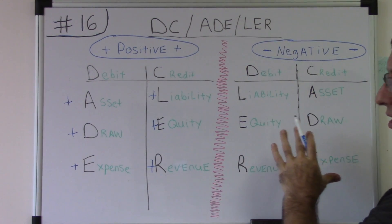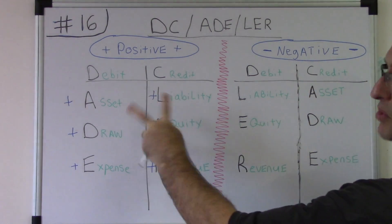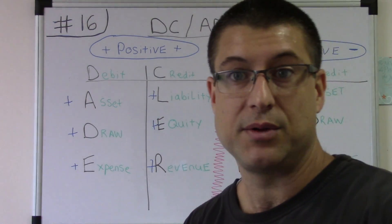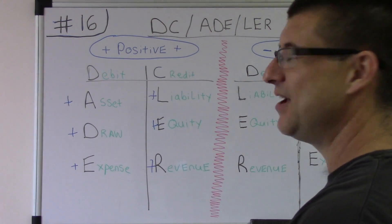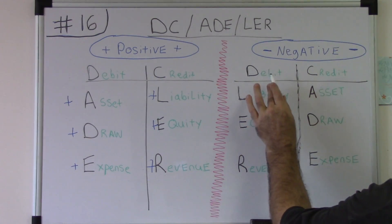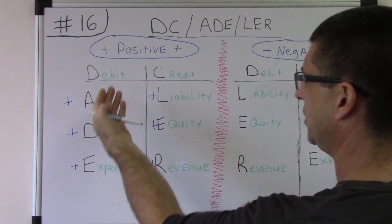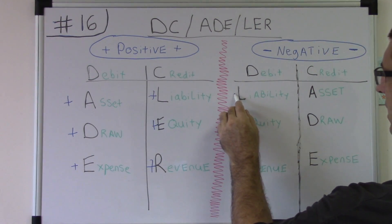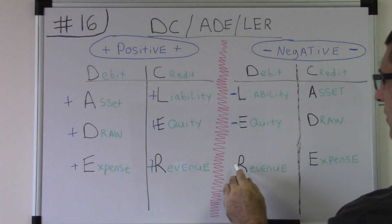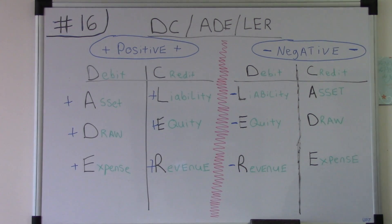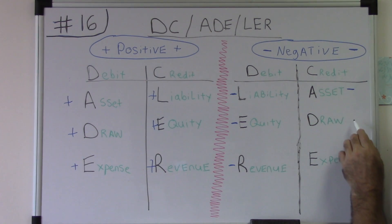I think this is the first time I've ever written it like this mirrored, and it totally mind-blew me. So this is the negative side — debits on the left, credits on the right still, but mirrored. Debit if you have a negative liability, debit if you have a negative equity, debit if you have a negative revenue. Credit if you have a negative asset, credit if you have a negative draw, credit if you have a negative expense.